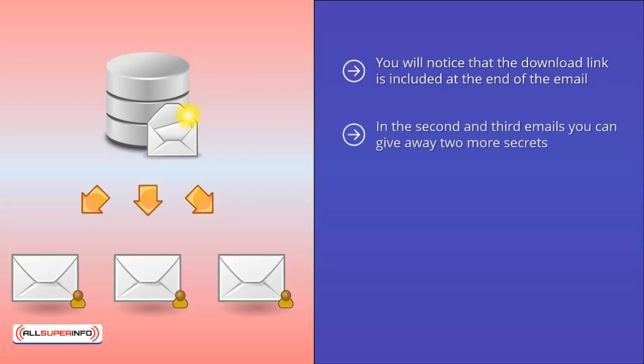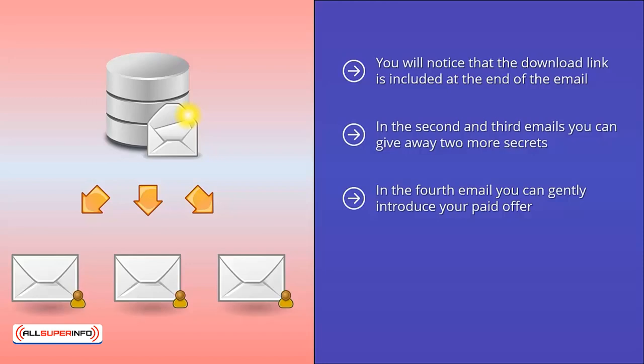In the second and third emails, you can give away two more secrets. You always want to leave a cliffhanger at the end of the previous email that will encourage them to open the next one when it arrives the next day. You can see an example of this in the first email above. In the fourth email, you can gently introduce your paid offer. Make sure that you describe the main benefits and the success that you have had by using the methods described in the product.